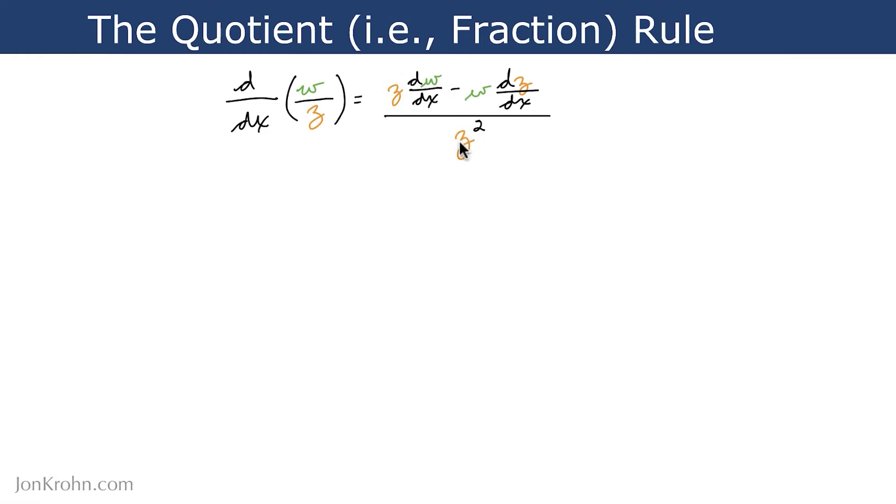The denominator is simply z squared. And this is useful in the same kinds of situations as the product rule. We already covered those reasons in the earlier video.